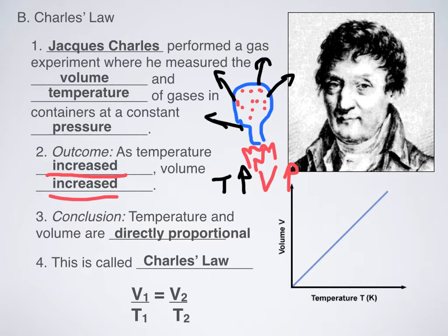So, what do we call that relationship? That type of relationship is called a direct proportion. So, temperature and volume are directly proportional. What does that mean? That means that if one variable goes up, the other variable goes up. If one variable goes down, the other variable goes down. And that's what a direct proportion is.